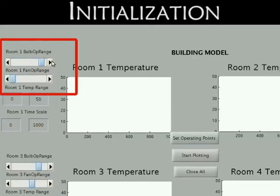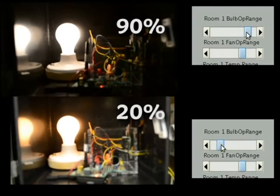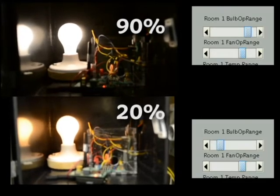During initialization, the user can set the operating points for heating and cooling. The operating points control the brightness level of the bulb, and hence the heating capacity of the zone.